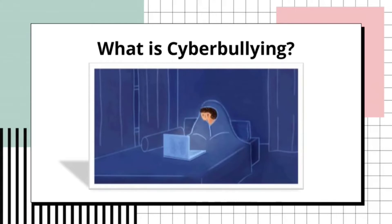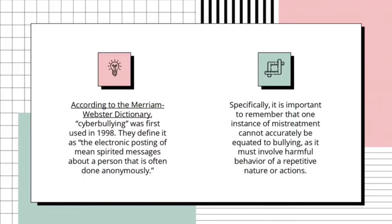That is why we all must remember from our hearts: what is cyberbullying? This is one of the most frequent questions we are asked, because a lot of us know what it is when it happens but have trouble wrapping concise descriptive words around it. Formally, according to the Merriam-Webster dictionary, cyberbullying was first used in 1998. They define it as the electronic posting of mean-spirited messages about a person, often done anonymously. However, as time has gone on and the internet itself has evolved, so has the definition of cyberbullying.